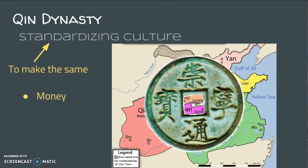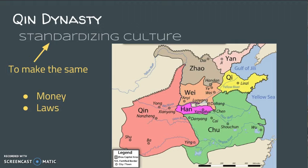He did this with all sorts of things. In laws and punishments he standardized — pretty strict punishments, I might add. He did this with measurements and writing. Basically, standardization made traveling around the dynasty a little bit easier. If everyone is using the same money, it's easier to trade with each other.